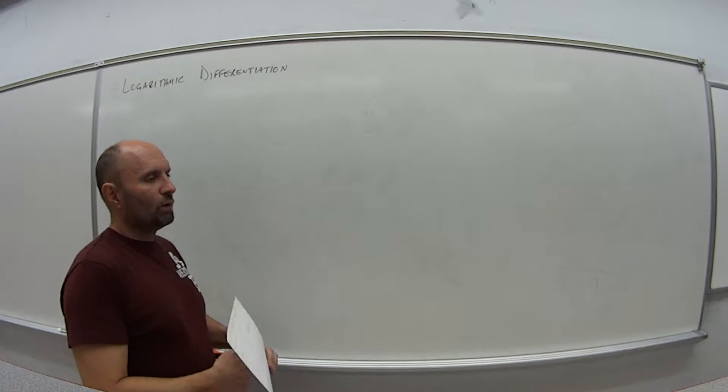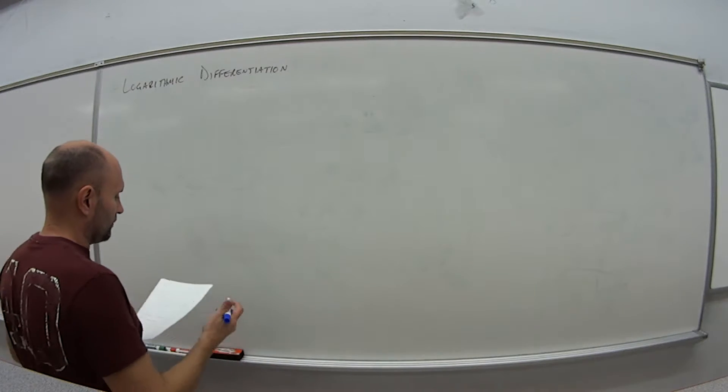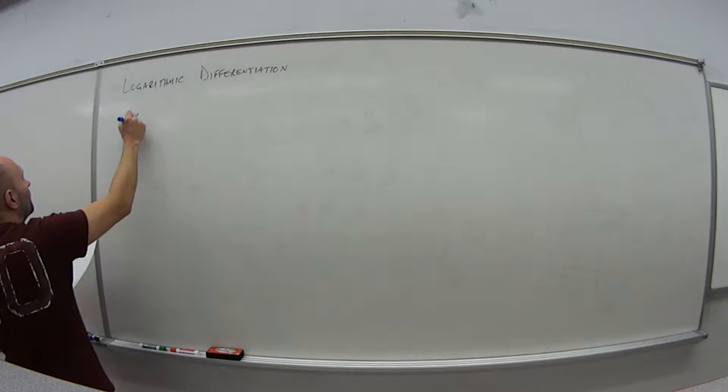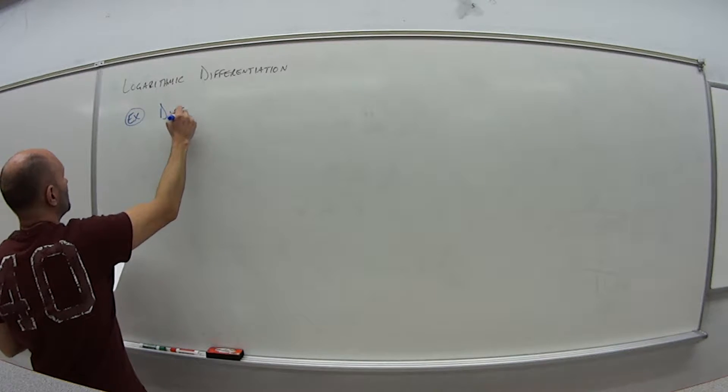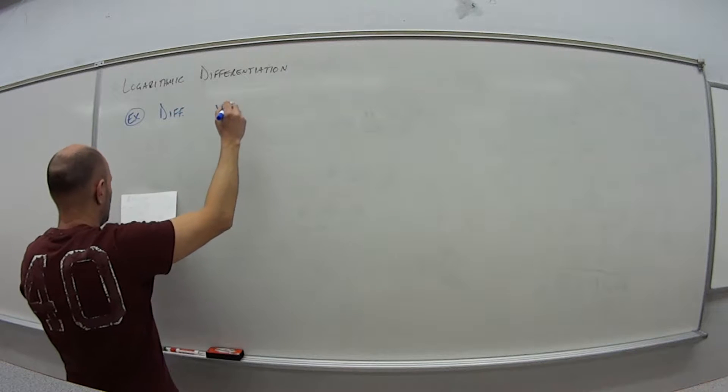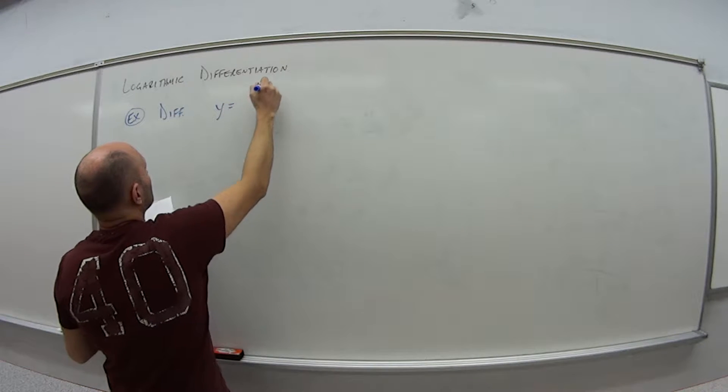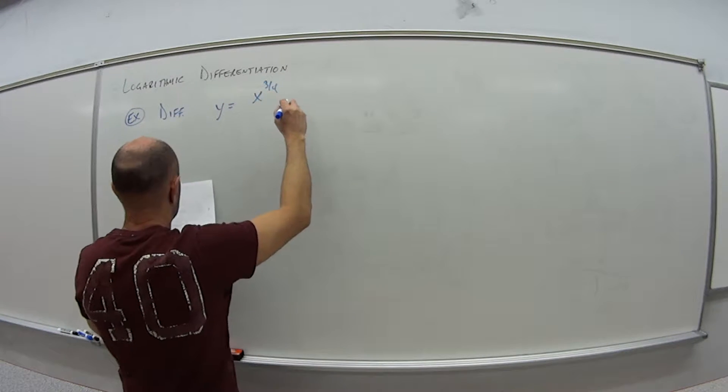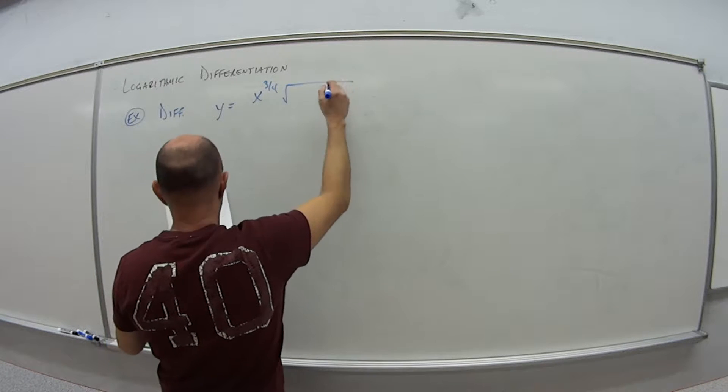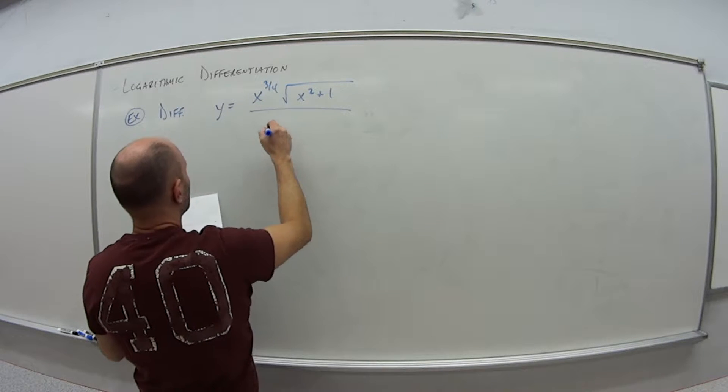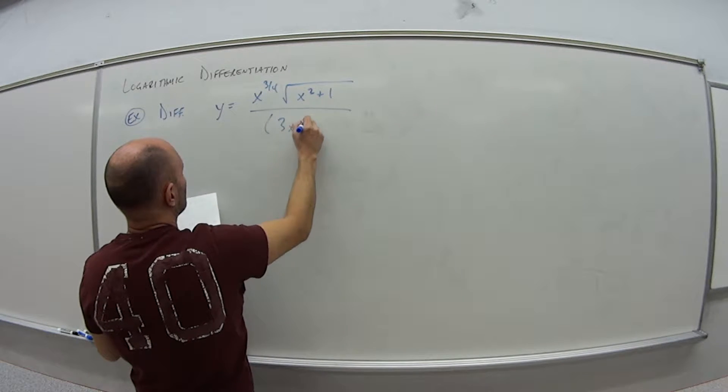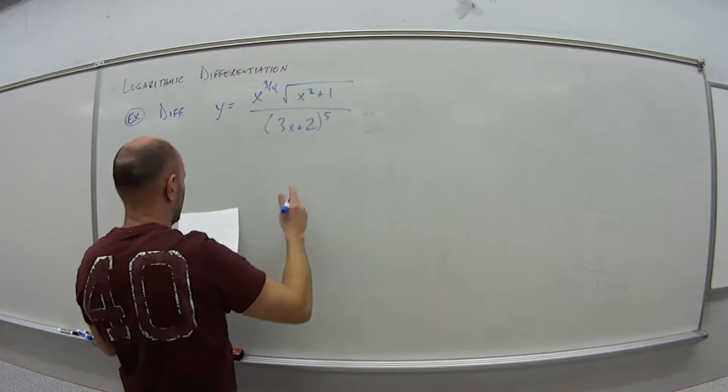We're going to use this property or this idea when we get some really nasty functions and we need to take the derivative. So for example, let's say I want to differentiate y equals x to the 3/4 power times the square root of x squared plus 1 all over 3x plus 2 to the 5th power.